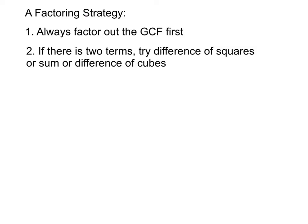After factoring out the GCF, the number of terms in your problem — remember, terms are separated by plus and minus signs — will be a clue to which method to use. If you have two terms, try the difference of squares or the sum or difference of cubes.